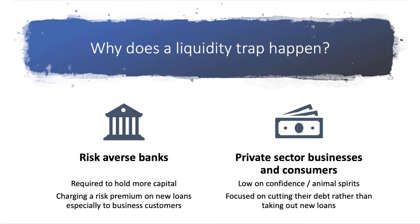So why does a liquidity trap happen? There are two main focuses. The first is the behavior of commercial banks themselves. Typically after or during a financial crisis, banks are required to hold more capital and are therefore less willing to lend out. They're not willing to increase their leverage, and if they do lend to businesses or households they may charge a risk premium on new loans. So there can be a disconnect between the low interest rates set by central banks and the higher interest rates on loans set by commercial lenders.